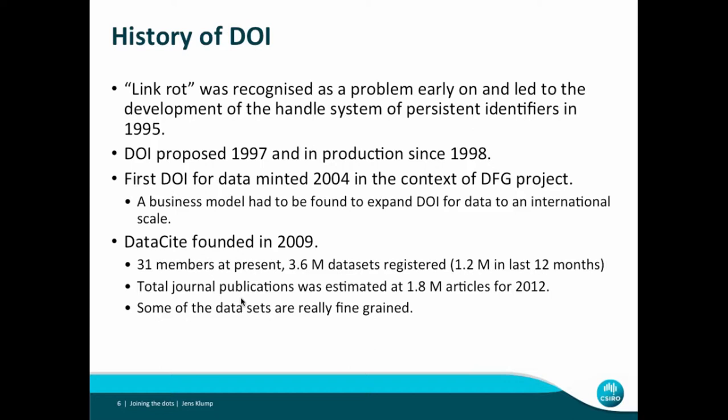If you Google DataCite statistics, you can see fine-grained statistics and will find that many of these datasets are very fine-grained. So even though 1.2 million in 12 months sounds impressive, it doesn't really reflect the output of papers published — it's still lagging behind, but catching up fast.